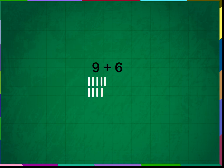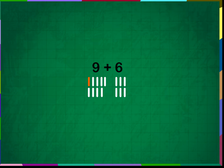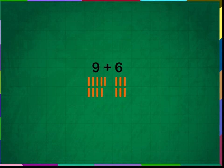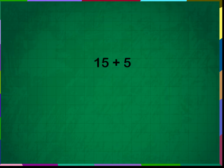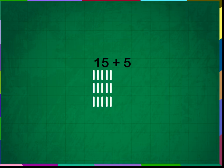Add 9 plus 6. Put 9 vertical lines below 9 and 6 vertical lines below 6, then add all the lines. Add 15 plus 5. Draw 15 vertical lines below 15 and 5 small lines below 5.